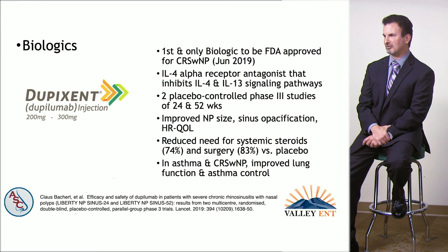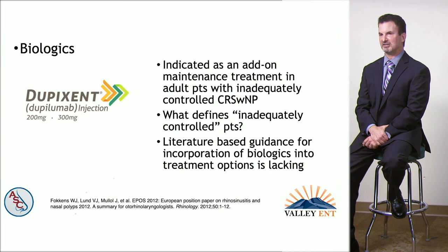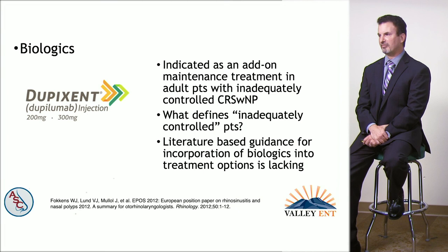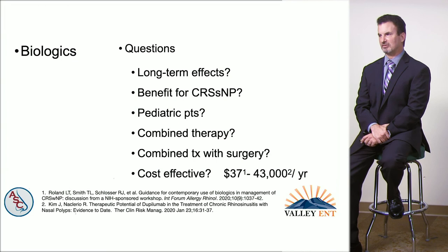In patients with asthma and polyps, Dupixent improved lung function and asthma control. It is indicated as an add-on maintenance treatment in adults — defined as greater than 18 years of age — with inadequately controlled chronic rhinosinusitis with nasal polyps. The main question is what defines 'inadequately controlled,' and because these drugs are new, literature-based guidance for incorporating them into treatment algorithms is still lacking.